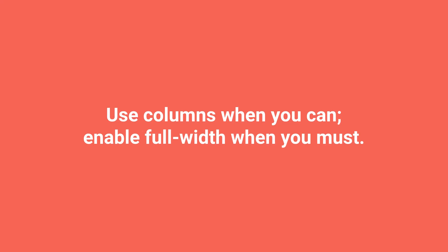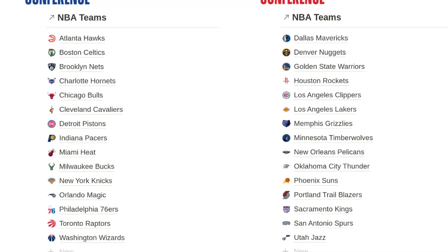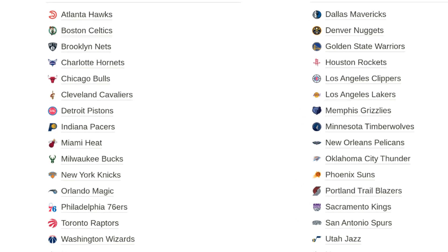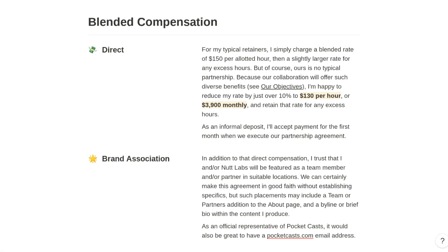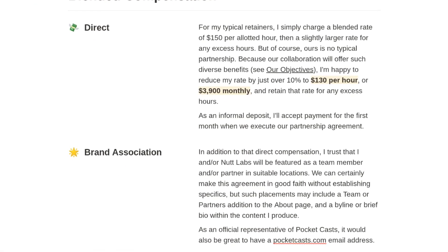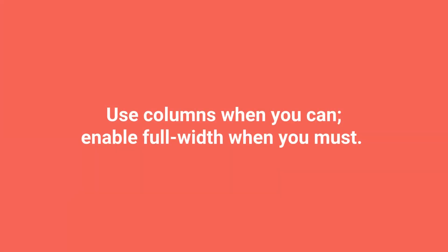Use columns when you can, and only enable full-width on the page when you must. Like diversifying blocks, columns can vary the structure of your page to boost aesthetic appeal and viewer engagement. Consider using columns for narrow content types like tables of contents, small photos, and simple lists. In the NBA project, you can see a nice example of two databases in list format aligned as columns. You can even place a section's heading in an adjacent column rather than above the content. Avoid columns when they'll abbreviate content and create ellipses. The full-width page setting is sometimes necessary for wider content, like databases with a high volume of properties.